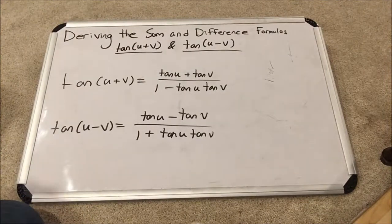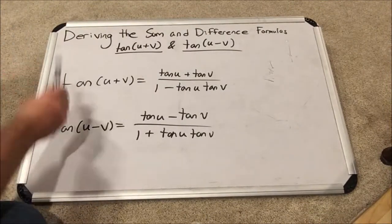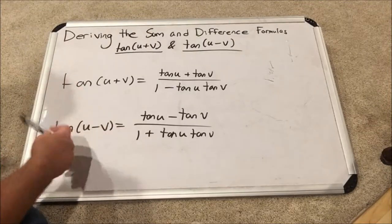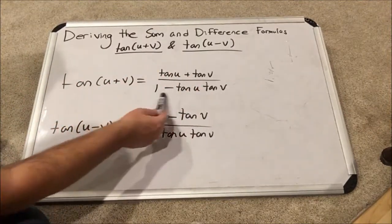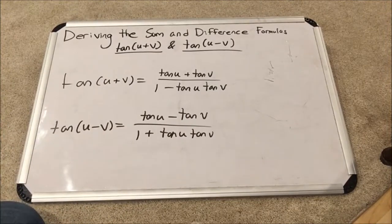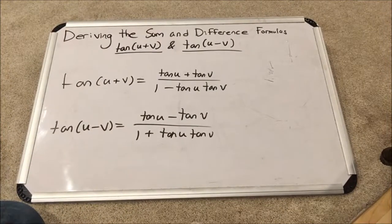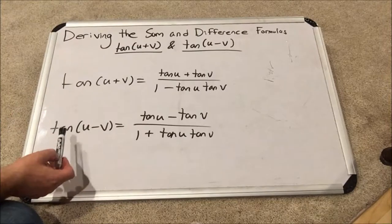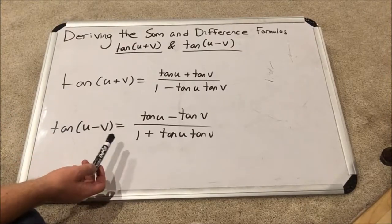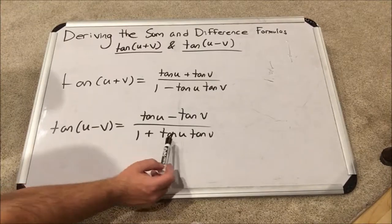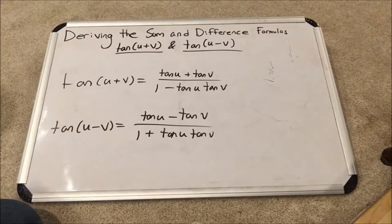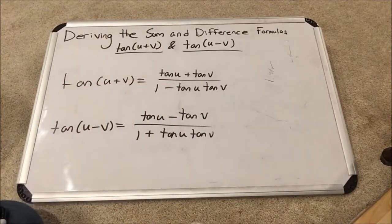Now, here are the formulas we are going to work on today. We are going to start by deriving tangent of u plus v, which is the tangent of u plus the tangent of v over 1 minus the product of tangent u and tangent v. Then we are going to derive, based on this result, tangent u minus v, which is equal to tangent u minus tangent v over 1 plus the product of tangent u, tangent v. As you can see, the signs have just flip-flopped.